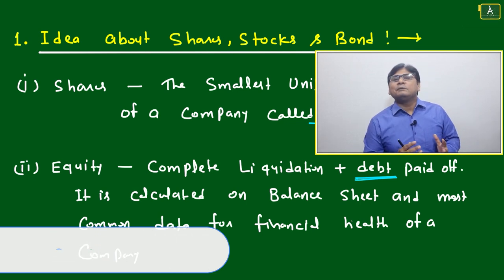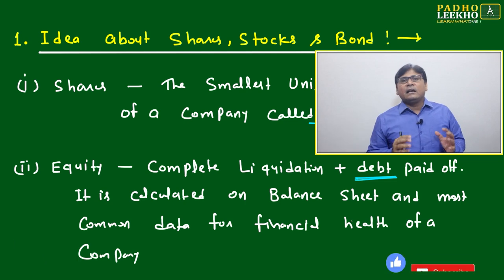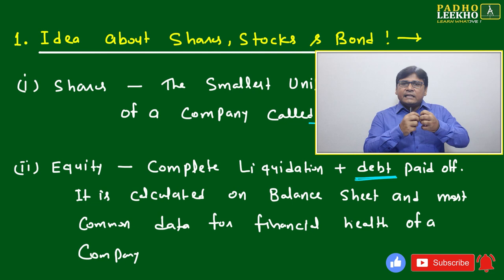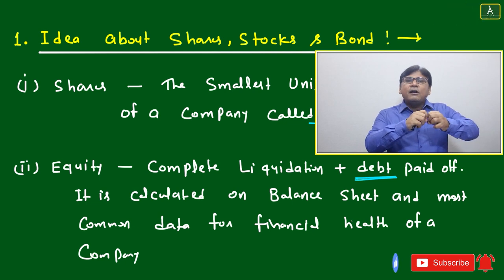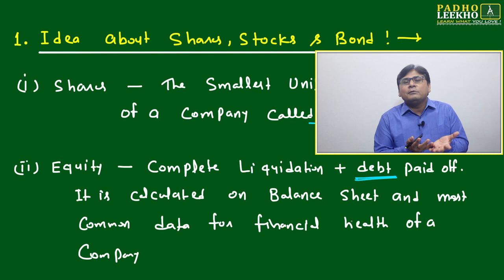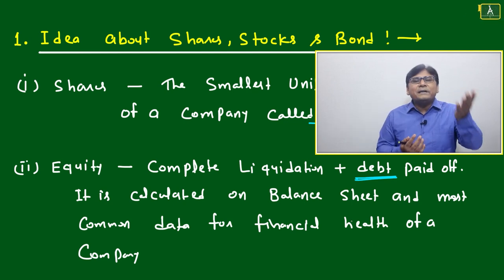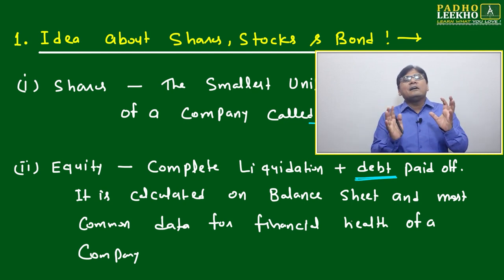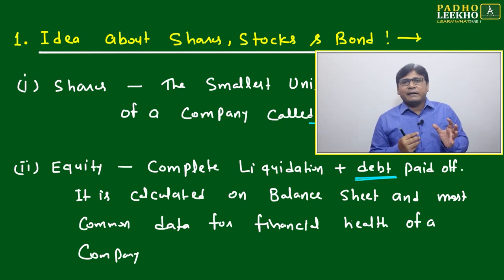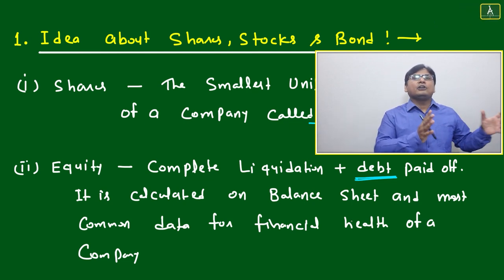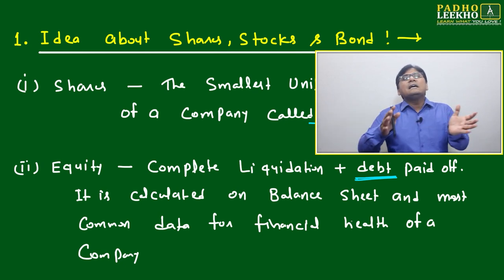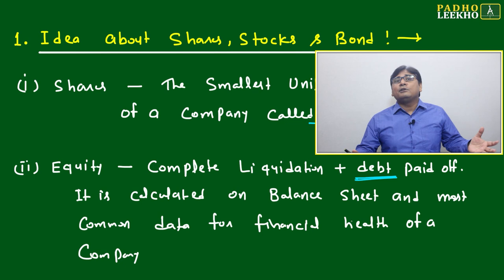If you sell everything today and pay your debt, you will get 6 billion dollars. If there are equity partners, that amount will be distributed with respect to 6 billion dollars — their base value becomes 6 billion dollars. But whoever purchased shares, only that portion will matter. Like if 20 percent of the 10 billion dollar capital was in the share market, then only that 20 percent will be affected — the complete equity effect will not be there.